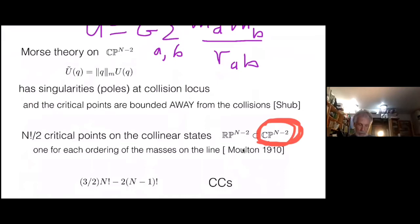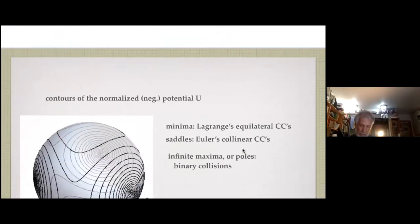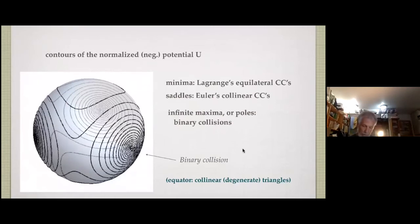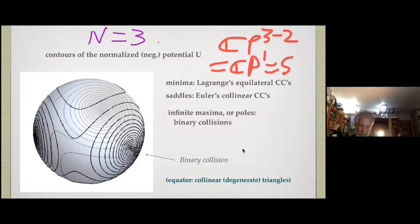What's U? U is G, it's the potential for the N-body problem. It's actually the negative of the potential. You take G times the product of the masses divided by the distances and sum it over the distinct pairs AB. And now this thing is homogeneous of degree minus one. This is homogeneous of degree one. This whole thing now is invariant under scaling and rotations and translations. And what that boils down to meaning is that it's a function on complex projective N minus two space.